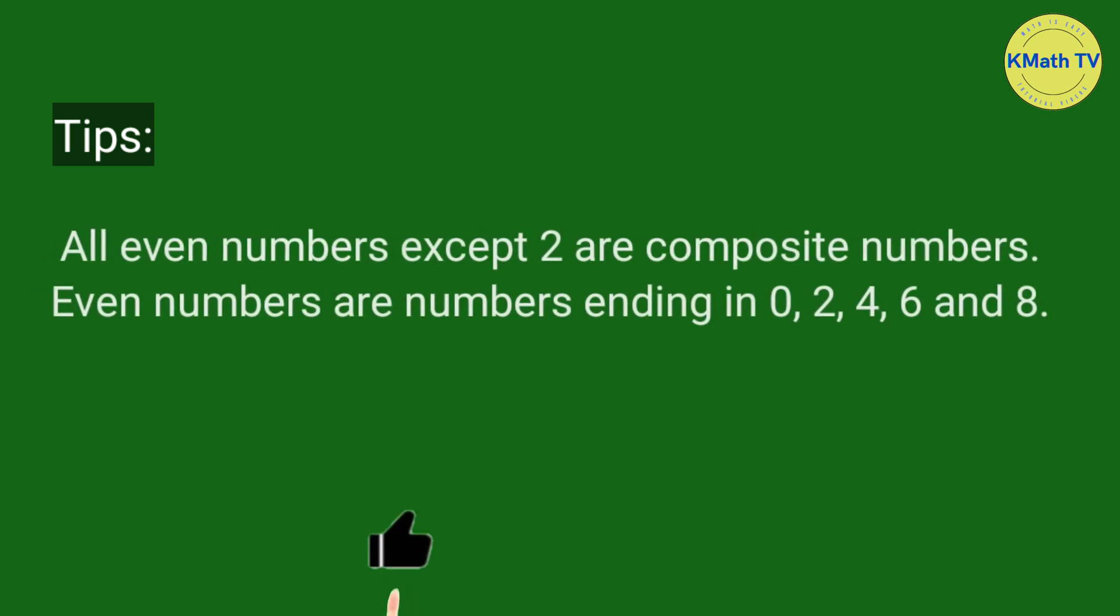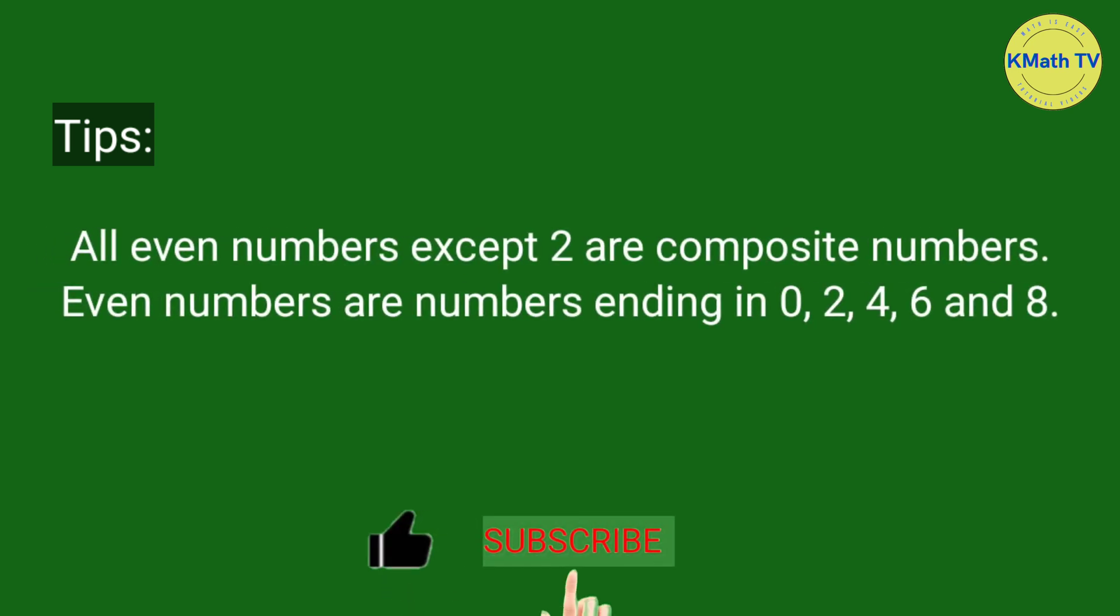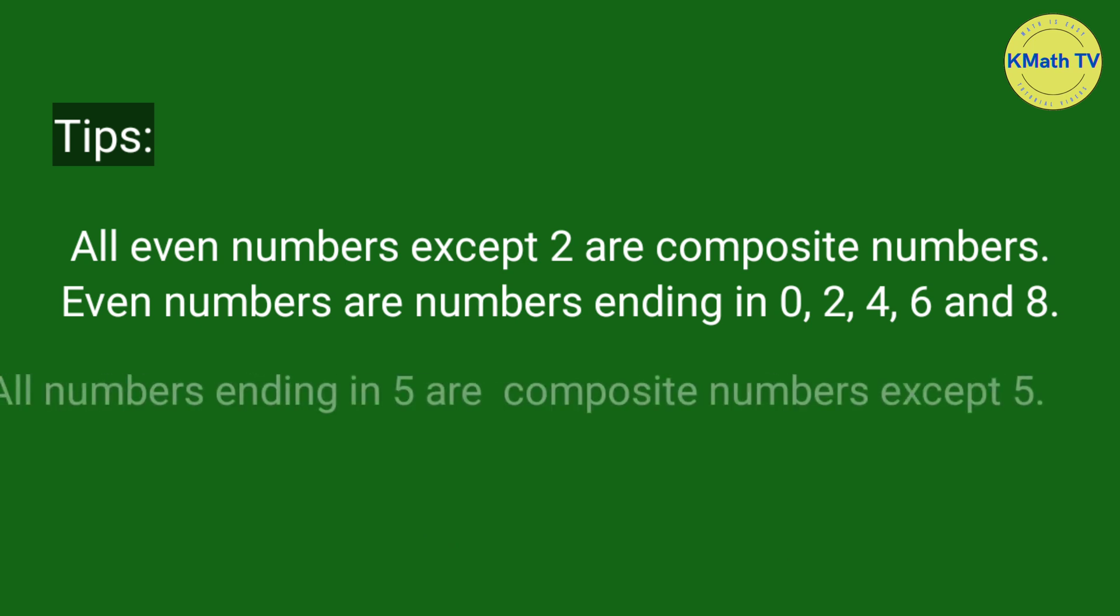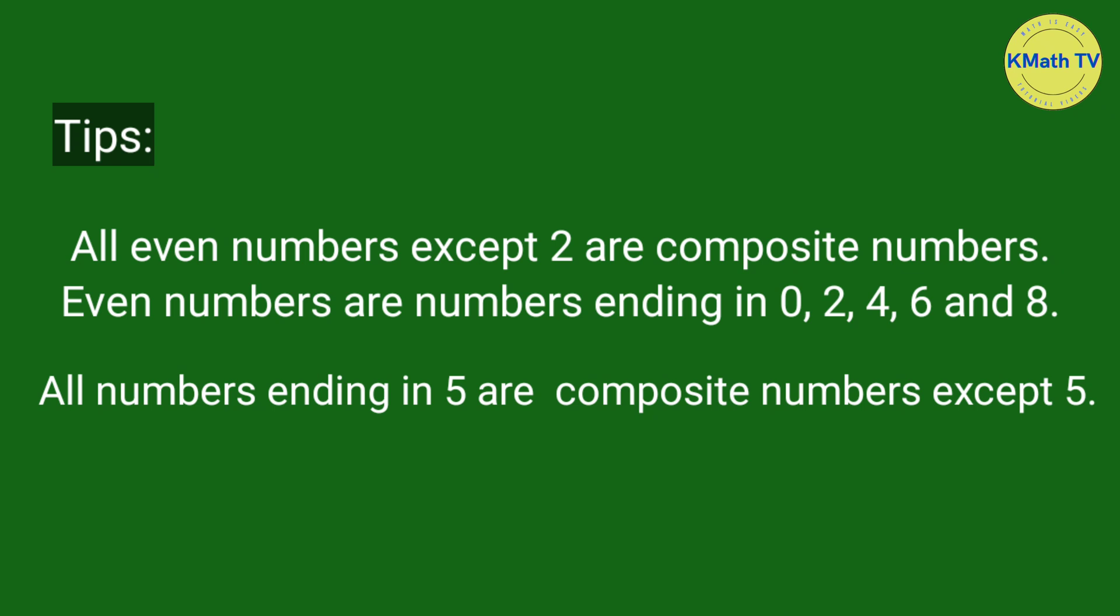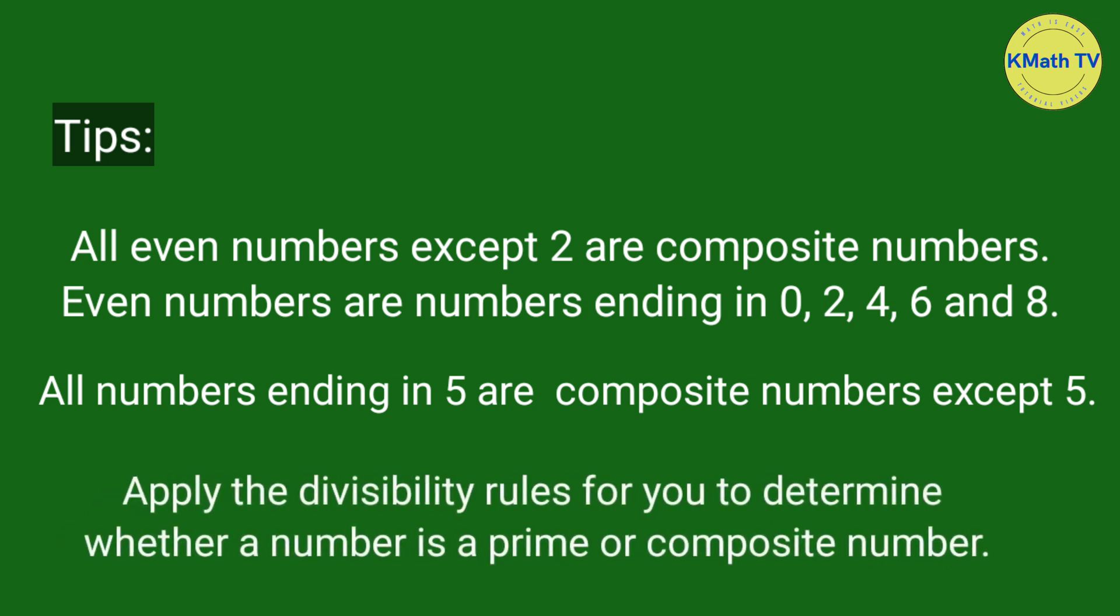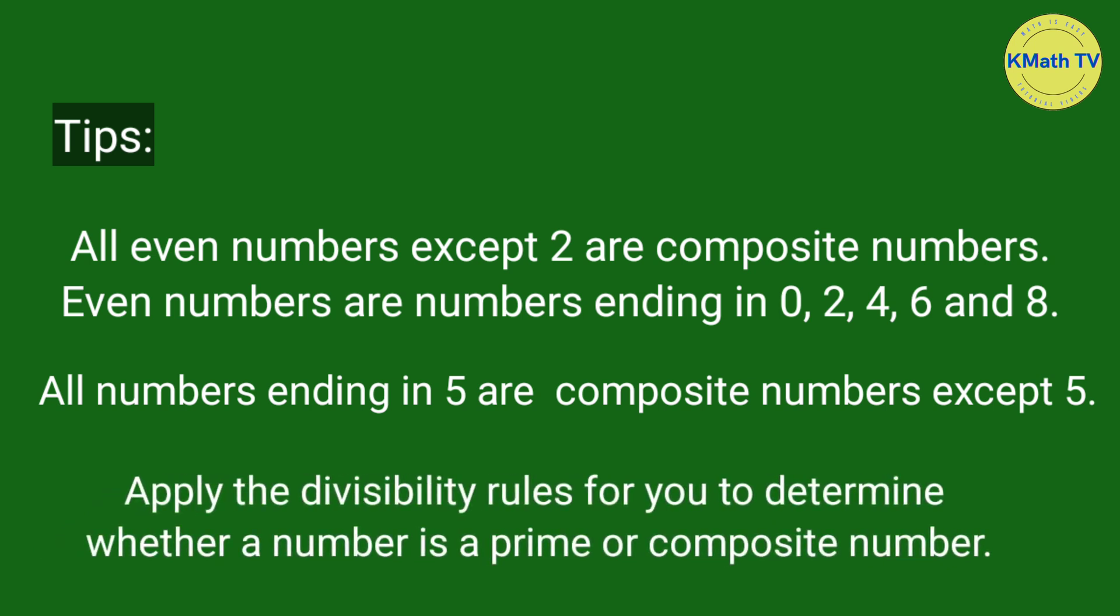Just remember these tips. All even numbers except 2 are composite numbers. Even numbers are numbers ending in 0, 2, 4, 6, and 8. All numbers ending in 5 are composite numbers except 5. Apply the divisibility rules to determine whether a number is a prime or composite number.